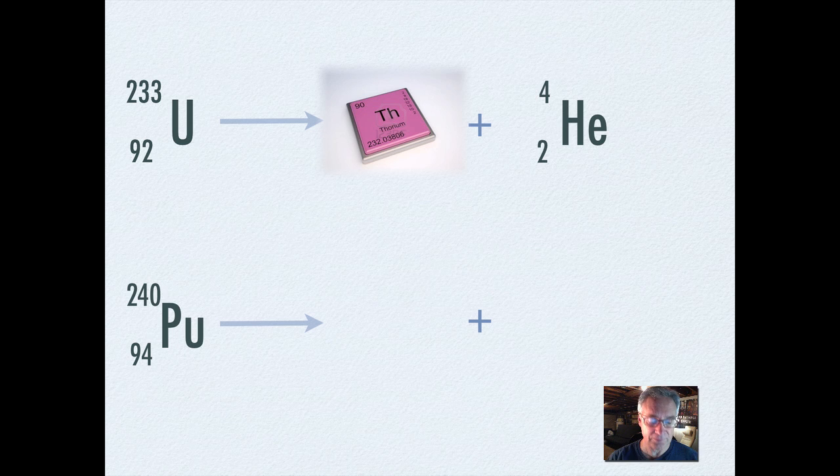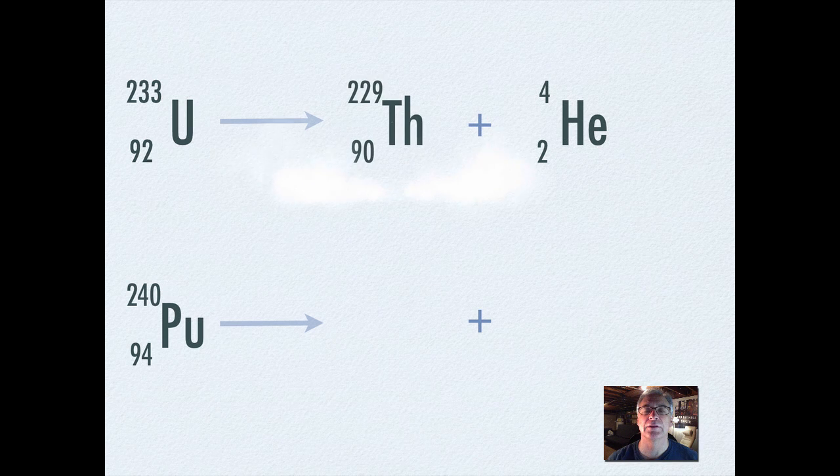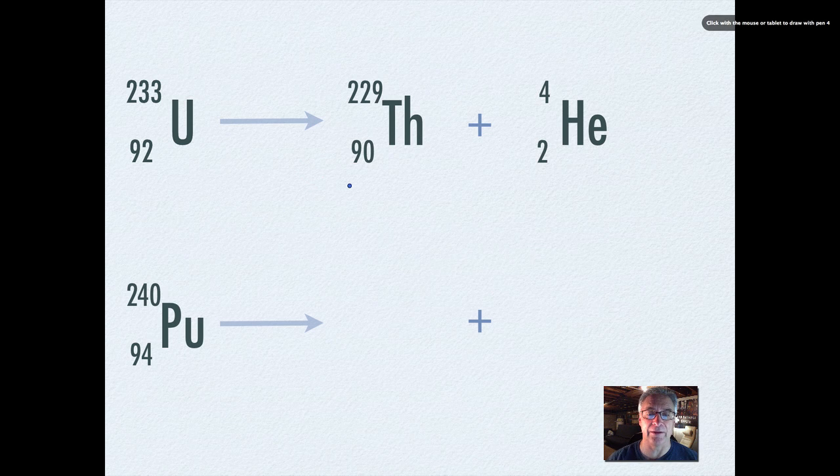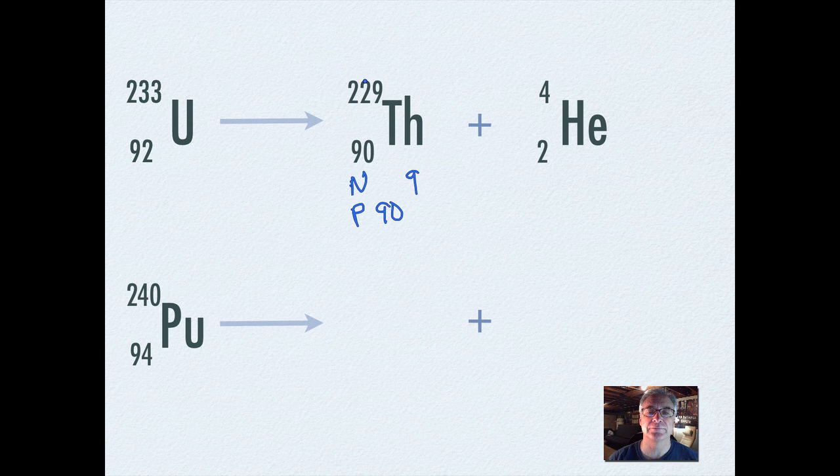Thorium has an atomic number of 90 just like we predicted. And because of that, that's thorium. Now let's take a look again at the protons and neutrons. Here's the neutrons, here's the protons. In this case right here it has 90 protons. And basically what you need to do here is you'll need to subtract this from that, and that would be 139.